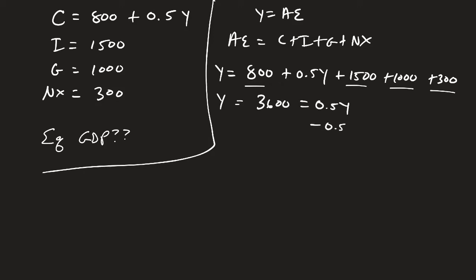We'll subtract 0.5Y from both sides. And we're going to get 0.5Y equals 3600.